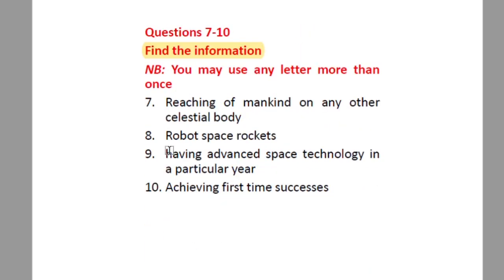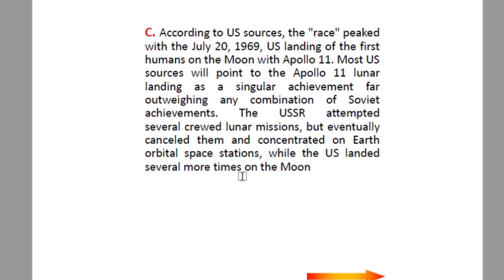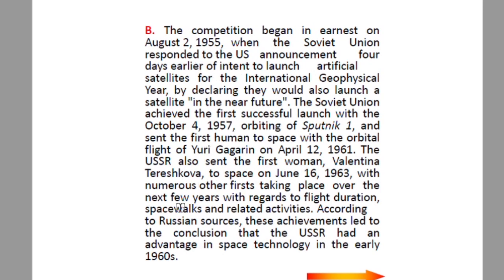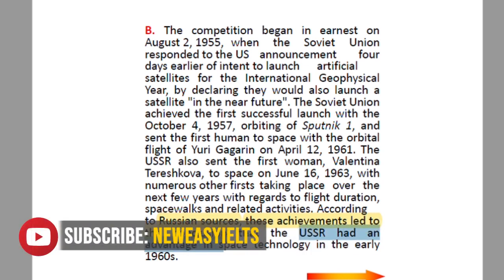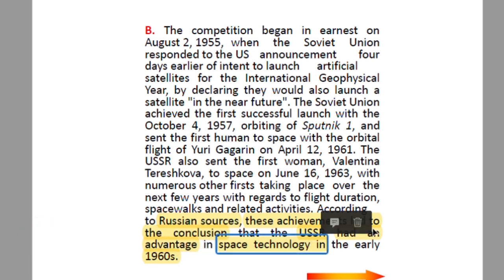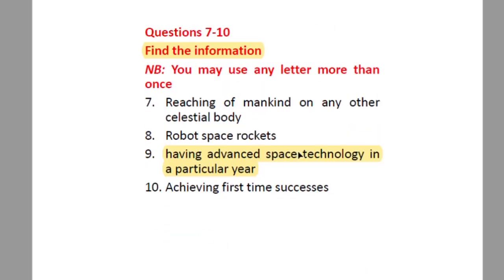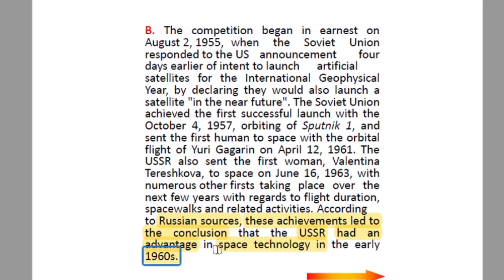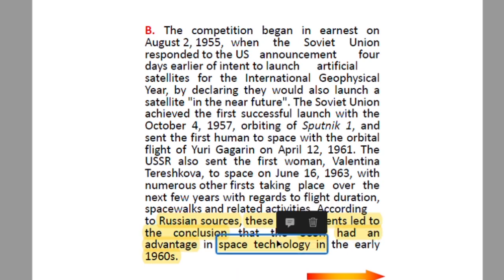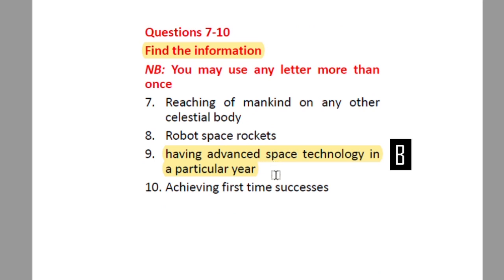Question nine: 'Having advanced space technology in a particular year.' In paragraph B, the last line reads: 'According to Russian sources, these achievements led to the conclusion that the USSR had an advantage in space technology in the 1960s.' We get the year (1960s) and the advancement in space technology by the USSR, so this is described in paragraph B.